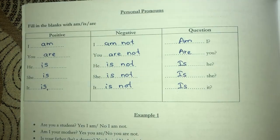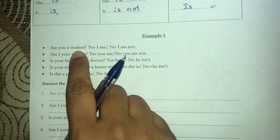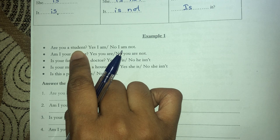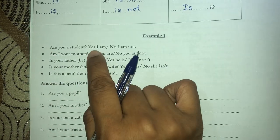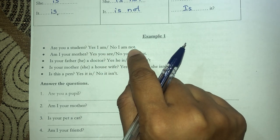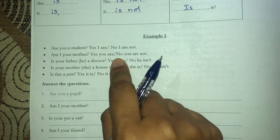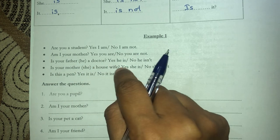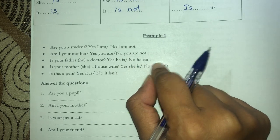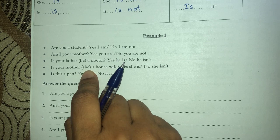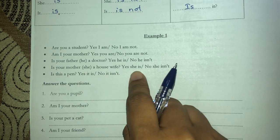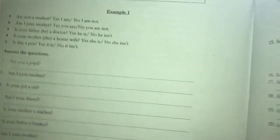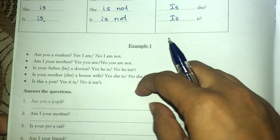For questions, you put am/is/are in front: Am I, Are you, Is he, Is she, Is it. Examples: 'Are you a student?' - 'Yes, I am' or 'No, I am not.' 'Am I your mother?' - 'Yes, you are' or 'No, you aren't.' 'Is your father a doctor?' - 'Yes, he is' or 'No, he isn't.' 'Is your mother a housewife?' - 'Yes, she is / No, she isn't.' 'Is this a pen?' - 'Yes, it is / No, it isn't.'